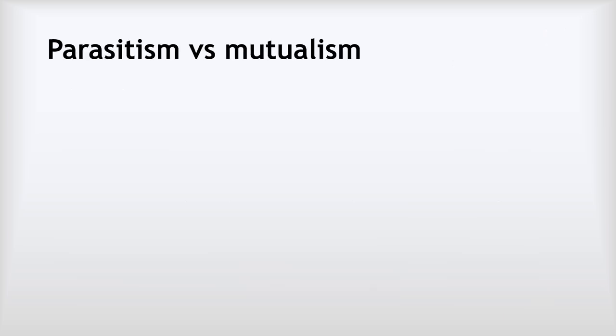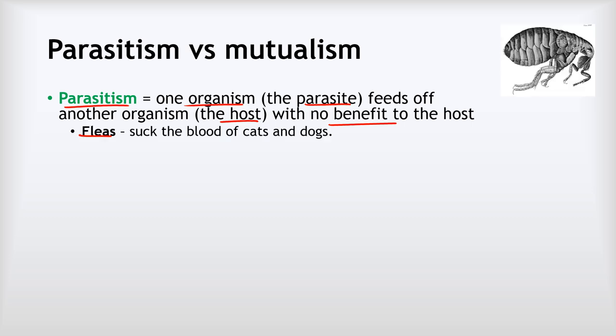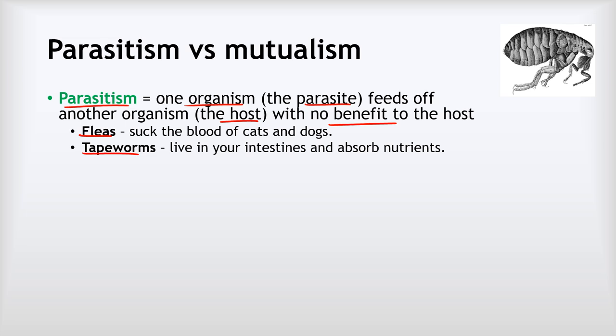Let's look at parasitism and mutualism — two different types of relationship between different species. Parasitism is when one organism, the parasite, feeds off another organism, the host, with no benefit to the host. Importantly, parasites don't generally kill the host — they keep it alive but feed off it. Examples include fleas, which suck the blood of cats and dogs without killing them, and tapeworms, which live inside intestines and absorb nutrients but provide no benefit and don't kill the host either.